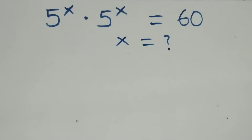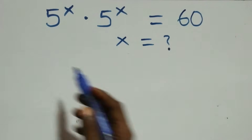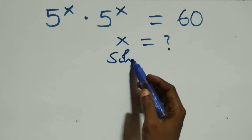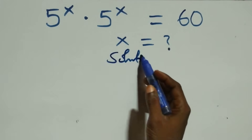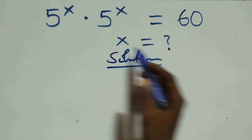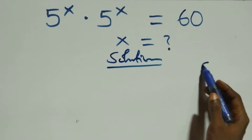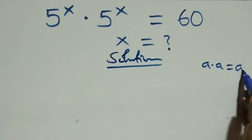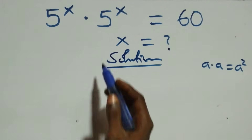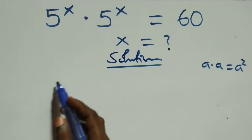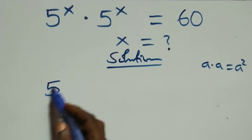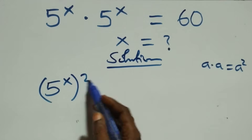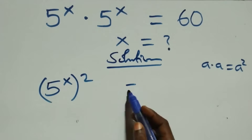Hello, you're welcome. Here we solve a nice exponential equation. What we have here follows when we have a times a, which is the same thing as a squared. That is, multiplying gives us 5 raised to the power x, cos squared, equals 60.